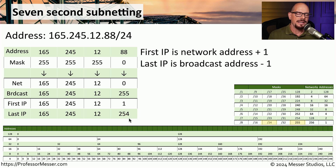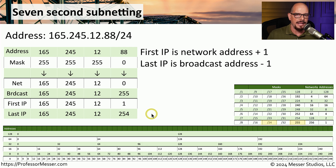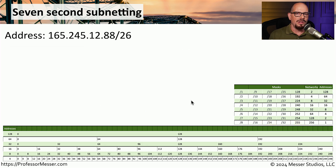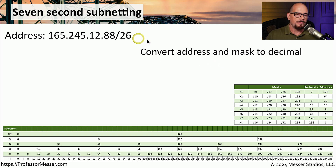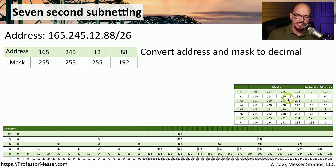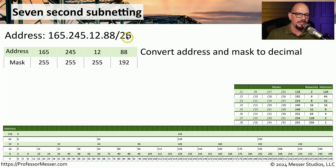That is the seven-second subnetting process using our chart and simple rules to define the network address, broadcast address, first available IP, and last available IP. Let's do another example that doesn't fall on simple 8-bit ranges. We'll use 165.245.12.88/26. The first step is to convert slash 26 to decimal. Looking at our chart, slash 26 is in the fourth octet with a value of 192 decimal, meaning our subnet mask is 255.255.255.192.